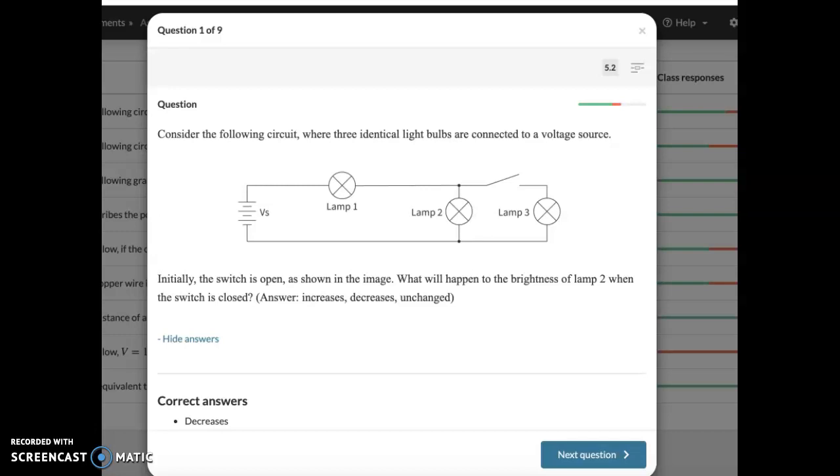Question 1. Consider the following circuit. You've got three identical light bulbs. What will happen to the brightness in lamp 2 when you close this switch? When you put resistors in parallel with each other, the overall resistance decreases. If we close this, then what you have is lamp 1, which is in series with two lamps in parallel.